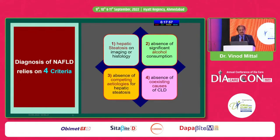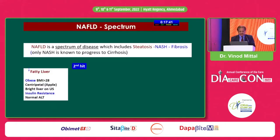These are four criteria which we have to understand before diagnosing NAFLD: one is hepatic steatosis; second, absence of significant alcohol intake; third, absence of compelling etiologies of hepatic steatosis or other diseases; and fourth, absence of coexisting chronic liver disease like viral hepatitis and other causes. All four criteria must be met before we diagnose NAFLD.